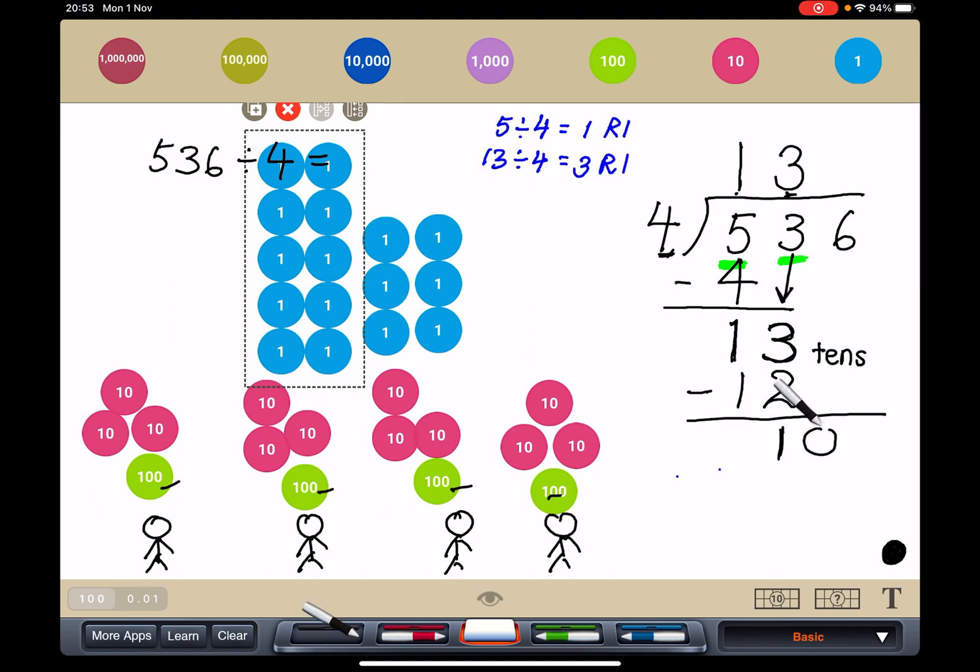Now, I could write 10. But I don't only have 10. Remember, I still have that 6 there. So I'm going to bring this down. And instead of just 10, I will have 16 ones. Can you see 16 ones here? 10 and 6. 10 here and 6 here.